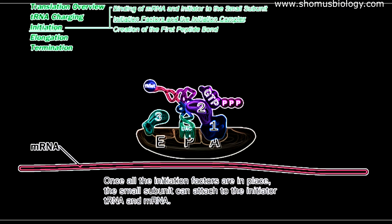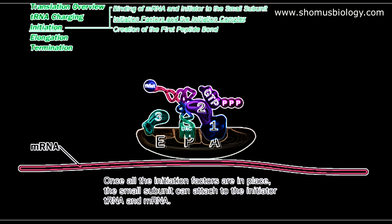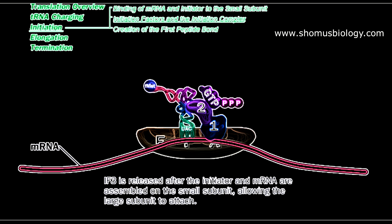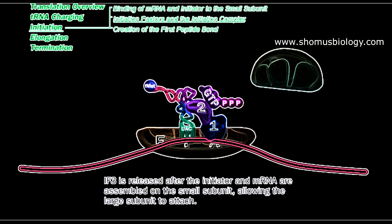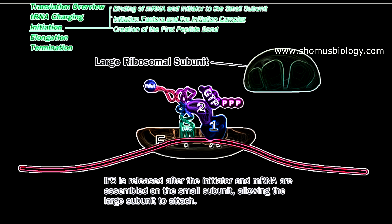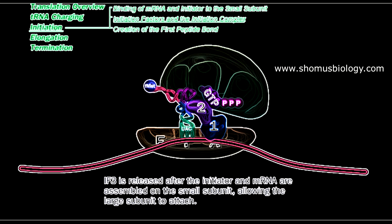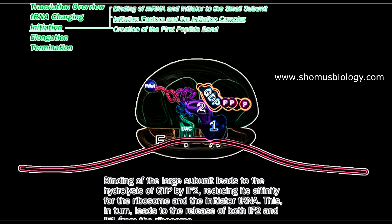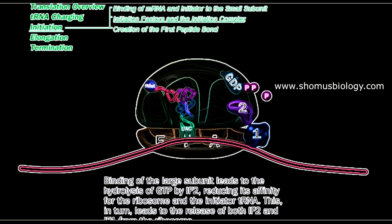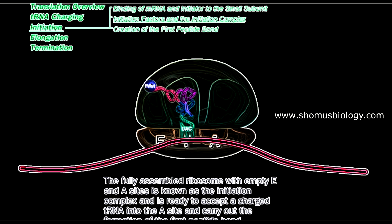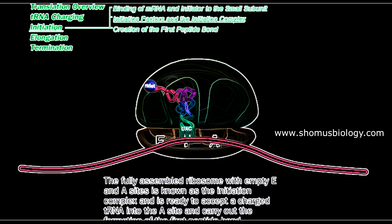The small subunit along with all initiation factors binds to the mRNA. Once attachment is done, IF3 is released, allowing the large subunit to interact with the small subunit. They associate together forming the complete translation initiation complex. IF2 hydrolyzes GTP to GDP and is released along with IF1 from the A site. Now both the E site and A site are free, with the formylated methionine-carrying tRNA present in the P site.